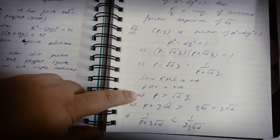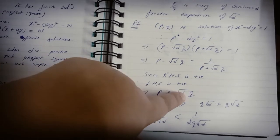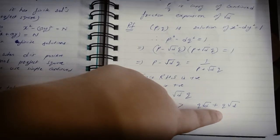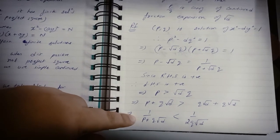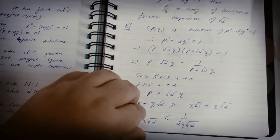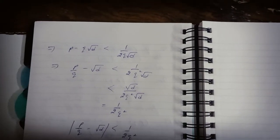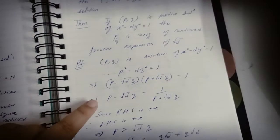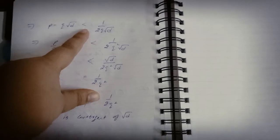So it means p + q√d is greater than q√d + q√d = 2q√d. So if I take the reciprocal, 1/(p + q√d) < 1/(2q√d). Or we can say, because p - q√d was equal to this number, we can say that p - q√d is less than this number.